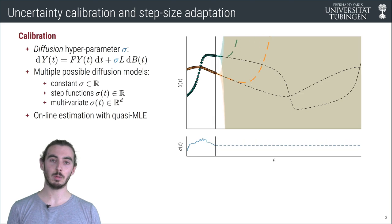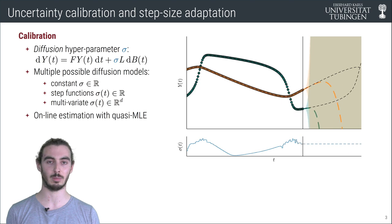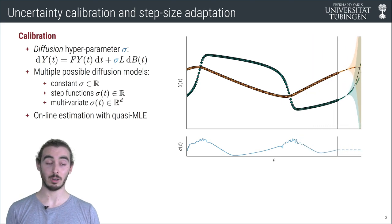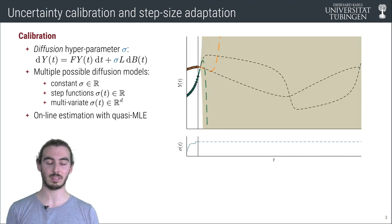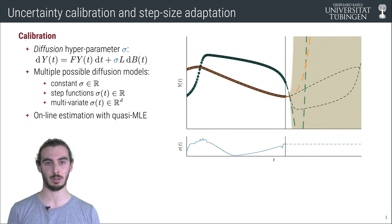In our paper we propose multiple methods for uncertainty calibration and to model the diffusion parameter. For instance, if we model the diffusion with a step function, we see that the probabilistic solver becomes more flexible and the uncertainties become more reliable.